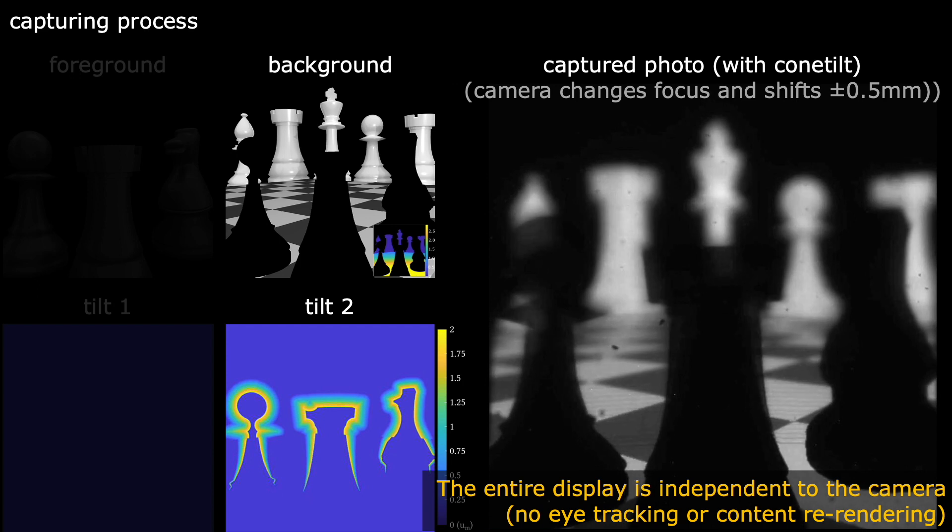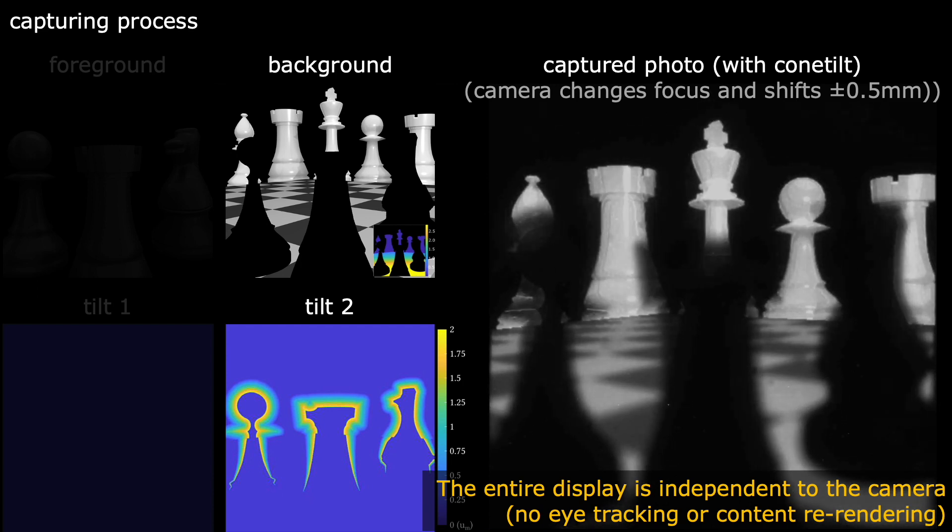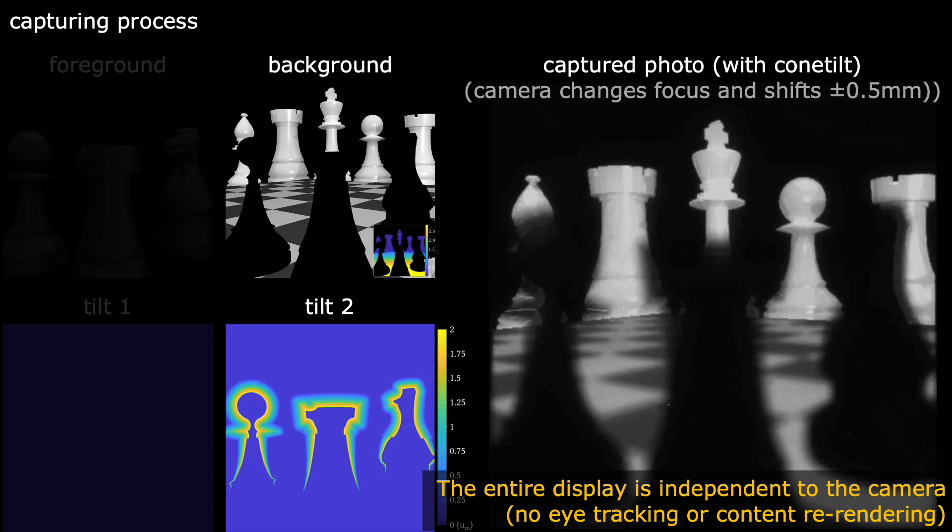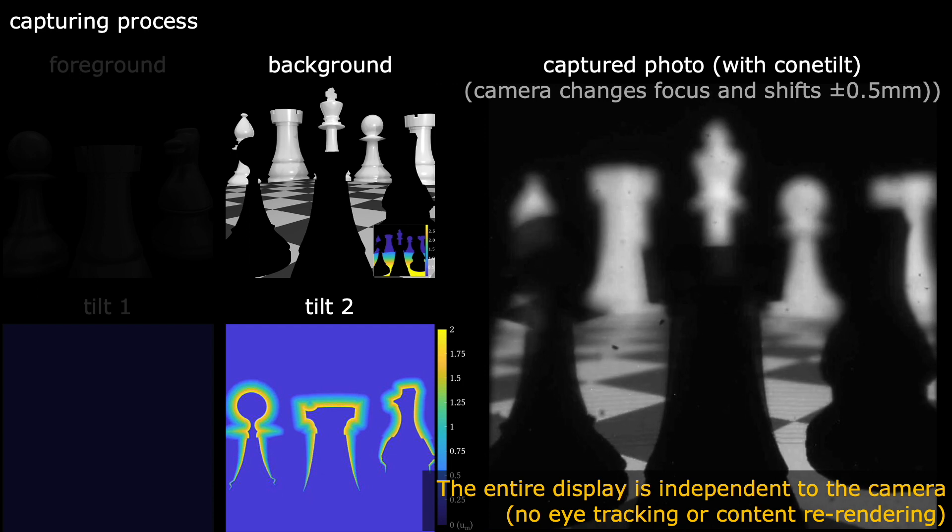Note that the entire display, including the content shown on the focal planes and the phase function, is independent of the camera. This means that our eyes can focus, move, or rotate freely within the eye box, and the occluded regions will automatically adjust.